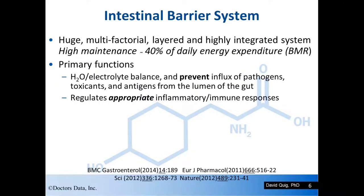The intestinal barrier system is a huge, multifactorial, layered, and highly integrated high-maintenance system. It's been estimated that maintaining the integrity of the intestinal barriers requires about 40% of our daily metabolic rate — it is extremely energy-dependent. The primary functions of the barrier systems are to regulate water and electrolyte balance, and very importantly, to prevent the influx of pathogens, toxicants, and antigens from the lumen of the gut. The barrier system also regulates appropriate inflammatory and immune responses.